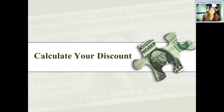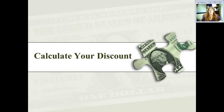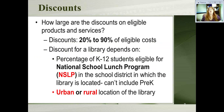The first thing I always tell people thinking about doing E-rate is to figure out how much of a discount you can get first, to see if it's even worth your while. E-rate is an ongoing program with forms you fill out throughout the year, so it takes some time and work. But if you get a big discount it may be worth all that effort. You can get anywhere from 20 to 90% off of your eligible costs for telephone, telecommunications, and internet.